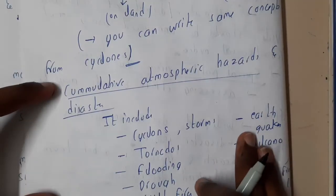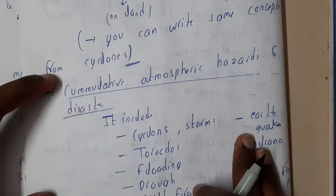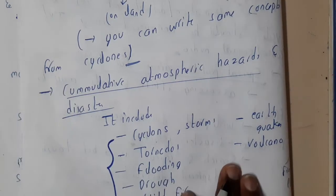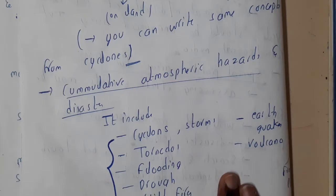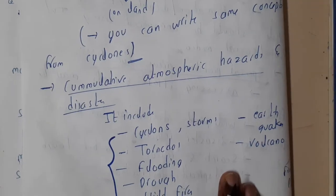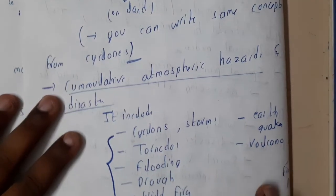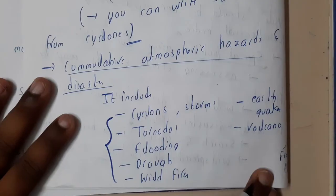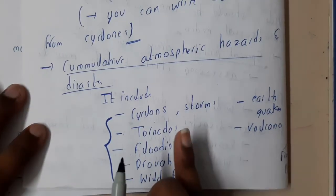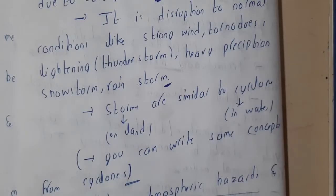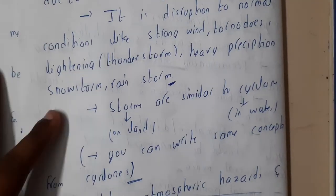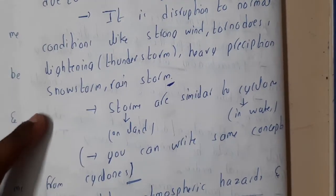In the next lecture, we will be going through cumulative atmospheric hazards — these are basically the disasters we will be discussing. We will start with the earthquake in the next lecture.